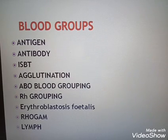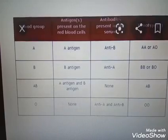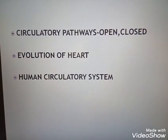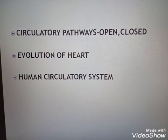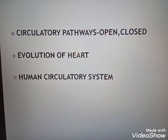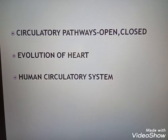We are going to discuss blood and lymph, and the circulatory pathways. In blood circulation, there are two types: open and closed circulatory systems.